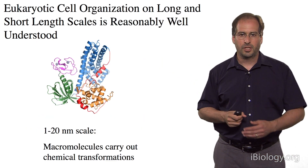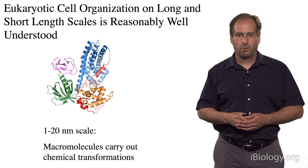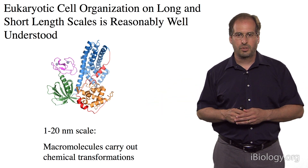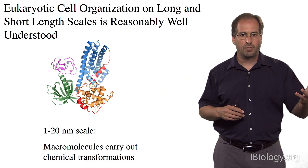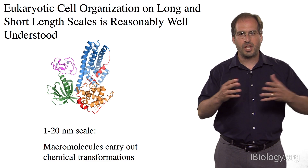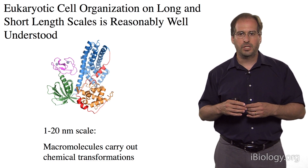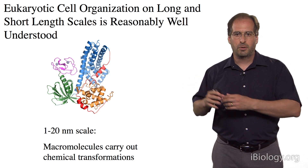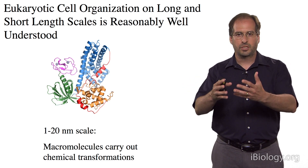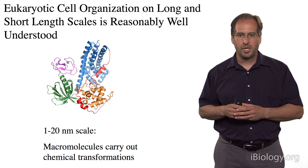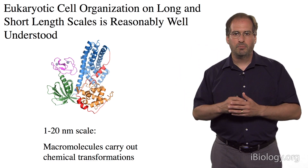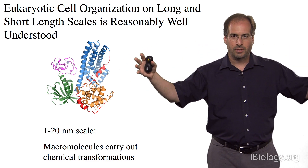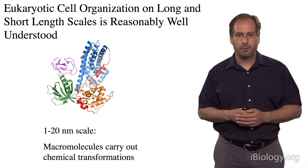Eukaryotic cells are organized across a huge range of length scales, from the organization of individual atoms and protein molecules, to the assembly of those proteins into larger and larger complexes, to the organization of those complexes into distinct subcellular compartments, out to membrane-bound organelles and cells, out to structures that consist of the entire length of the cell.